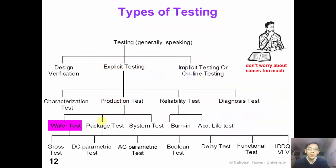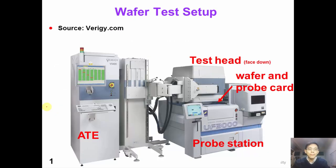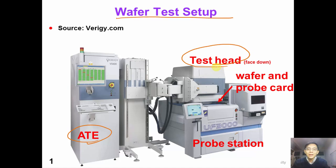We have shown a typical production test for packaged ICs. So how can we test the dies on the wafer — how do we perform wafer test? This picture shows a typical setup for wafer test. On the left-hand side is our ATE; on the right-hand side is the test head, which is now facing downward. The probe card and the load board sit between the test head and the probe station, and there are many wafers stored in the probe station.